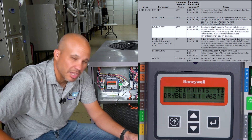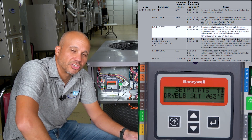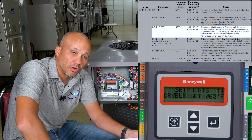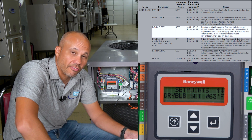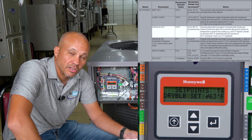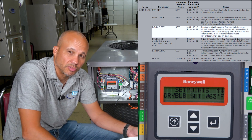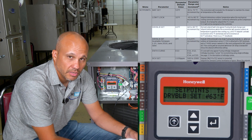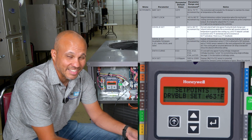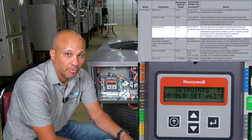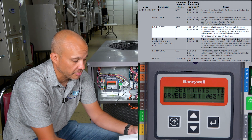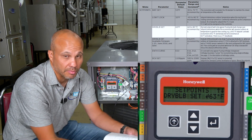Dry Bulb Set Point: the default is 63 degrees, which is a pretty good and most optimal setting. Most codes for most geographic regions will require a set point of 70 degrees, meaning if it's below 70 you have to use the economizer. I'm not a fan of having the economizer on all the time between 63 and 70 because there are some humid days where it becomes a problem. My suggestion: set it to 63, or comply with the code and upgrade to an enthalpy sensor instead of dry bulb.